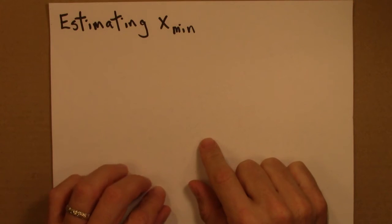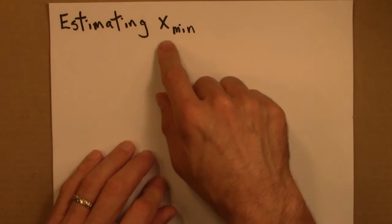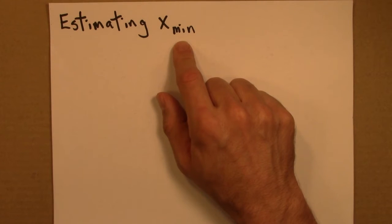So we've seen how to use the maximum likelihood estimator to come up with the best estimate for alpha, the exponent in the power law. But what about xmin? How should we estimate xmin?